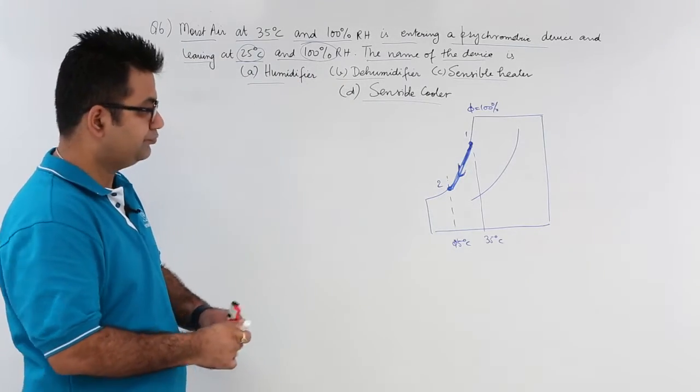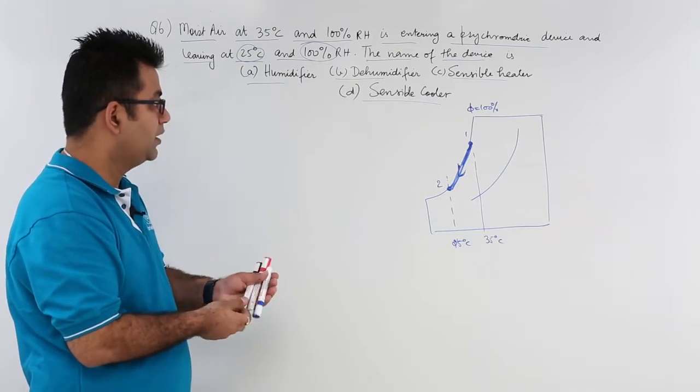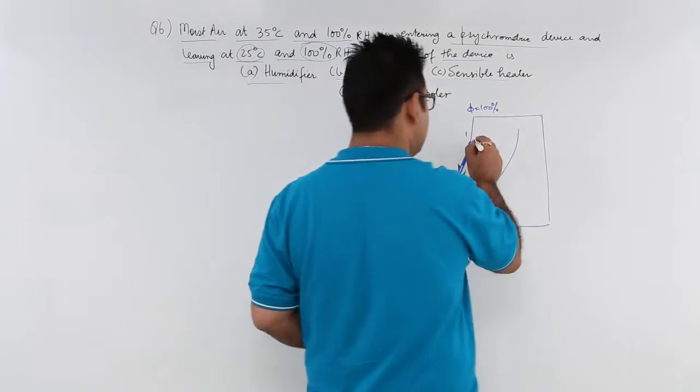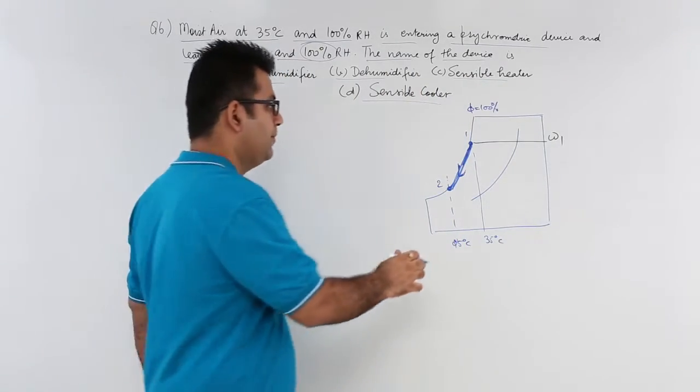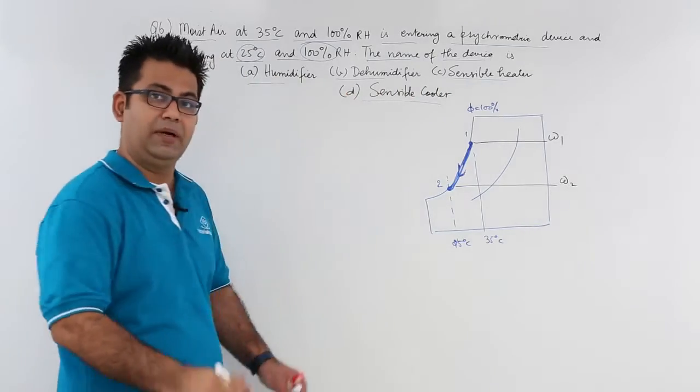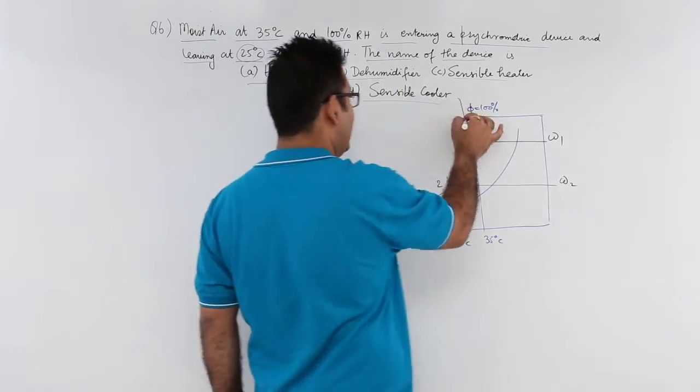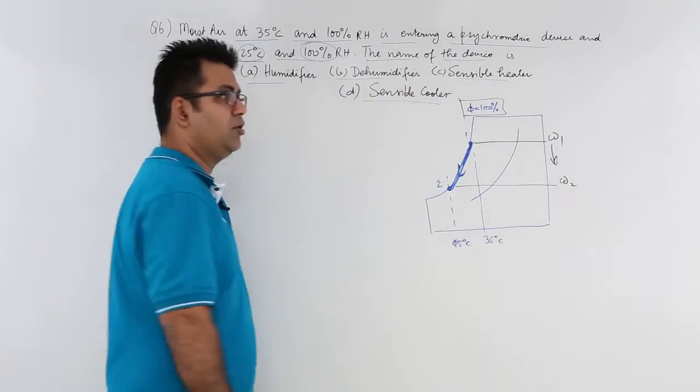Now what has happened? The RH is same on the same RH line. So if you look at this, this is the specific humidity at state 1 and this is the specific humidity at state 2. The RH stays the same at both the points but the moisture content has gone down.